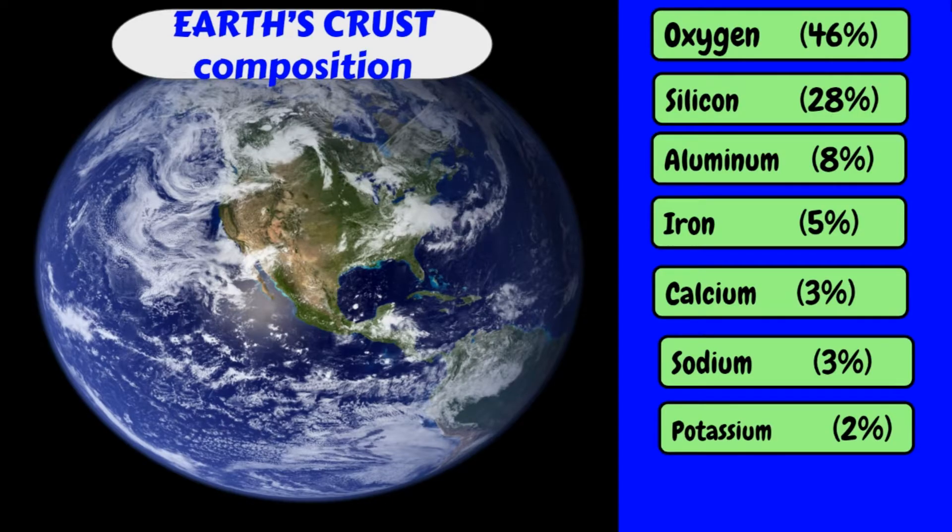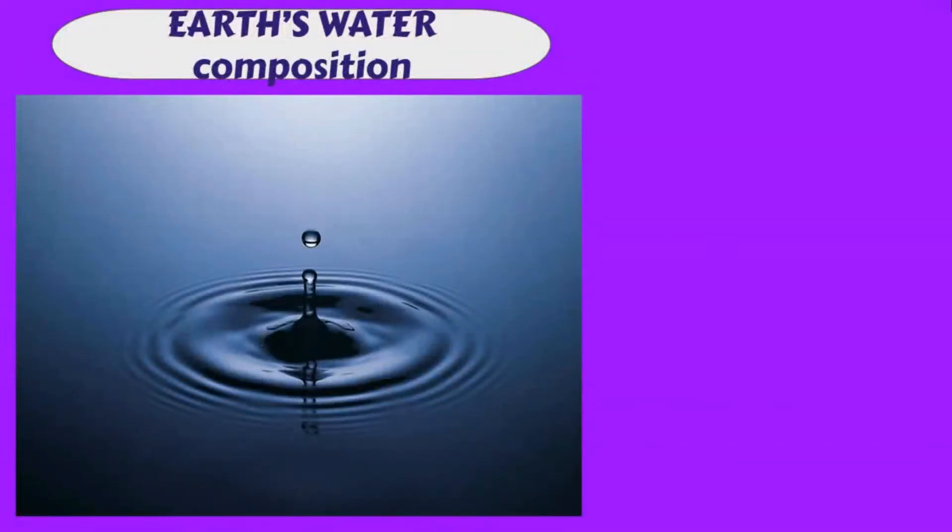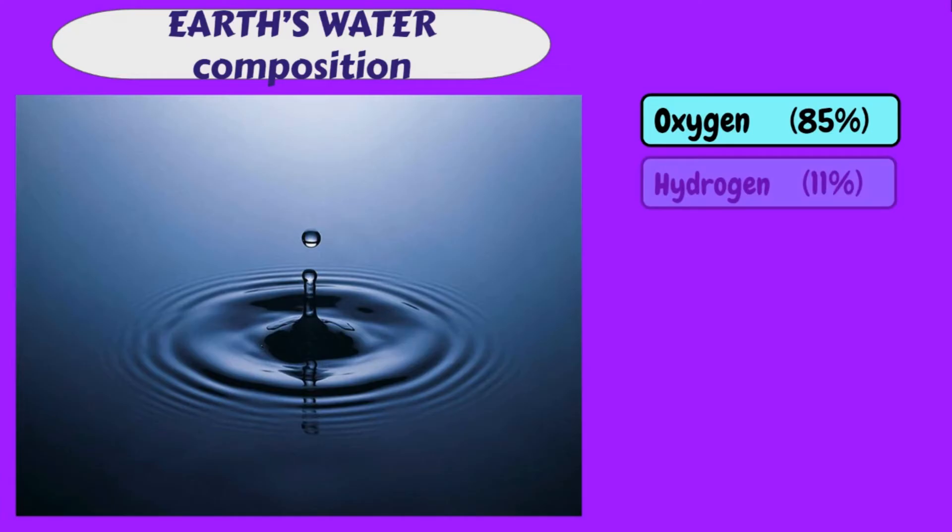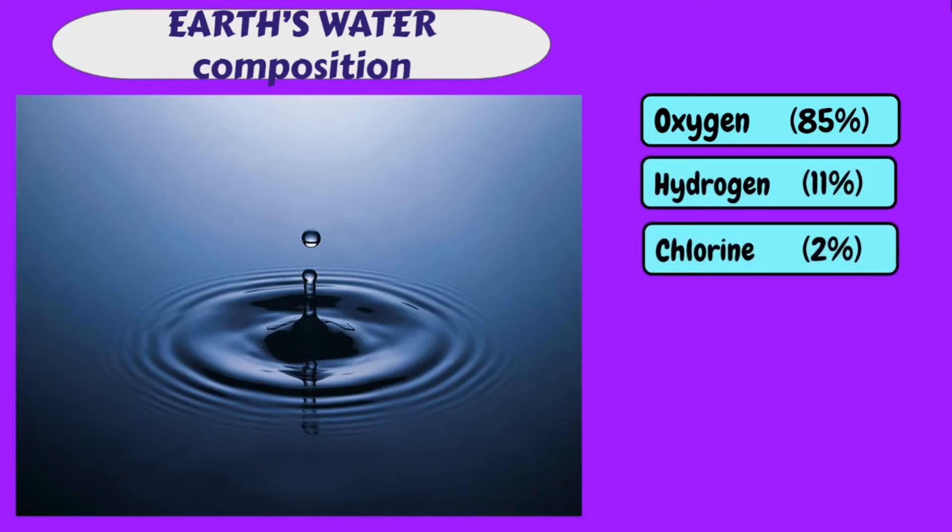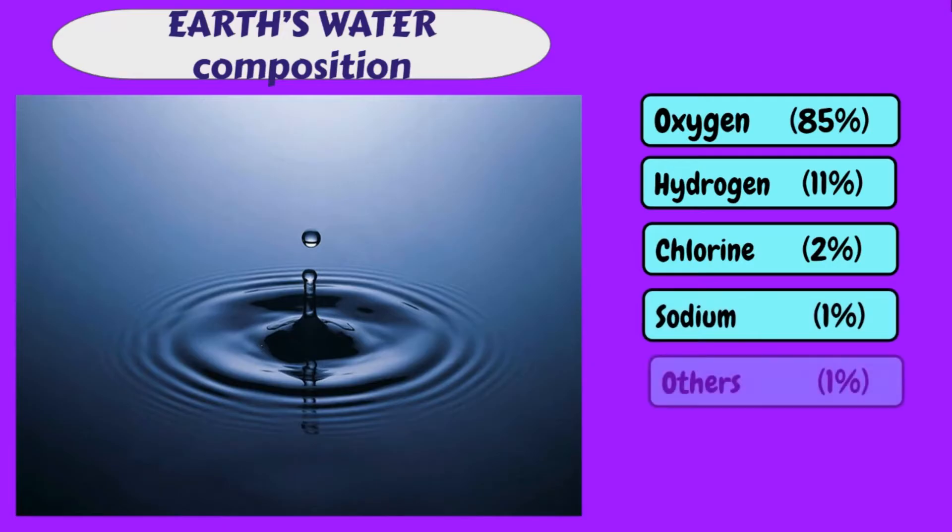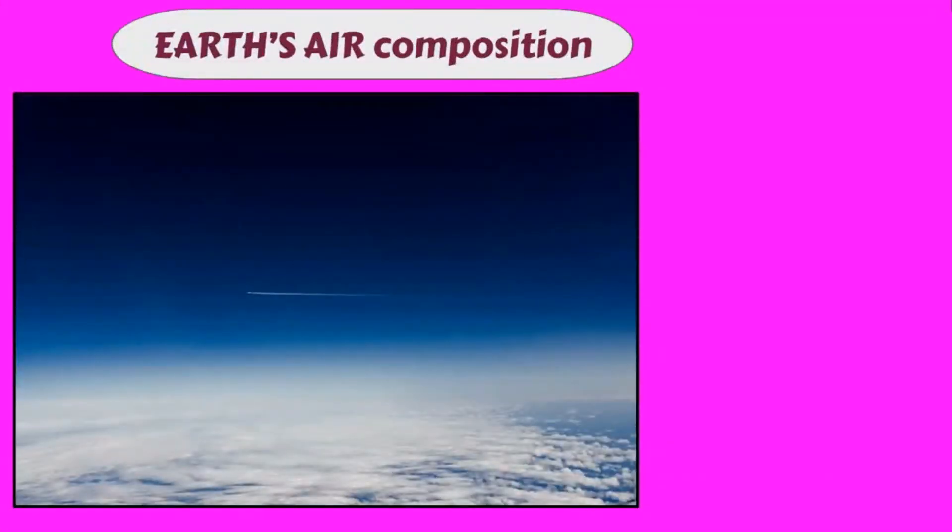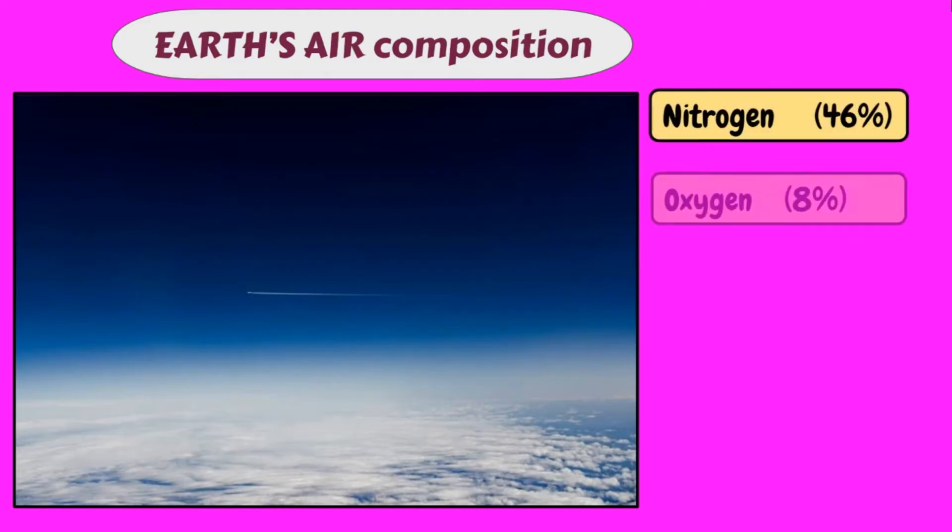For our Earth's water composition, 85% oxygen, 11% hydrogen, 2% chlorine, 1% sodium, and others are 1%. Next is the air composition, which has 46% nitrogen, 8% oxygen, and 3% other gases.